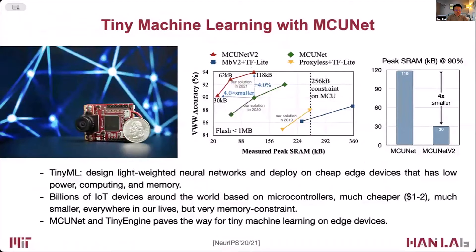Our previous work in tiny machine learning is MCUNet, where the goal of tiny ML is to design lightweight neural networks on cheap, low-power hardware devices, where there are billions of IoT devices. From 2019 to 2021, MCUNet pushed the boundary, reducing memory consumption from 256 kilobytes all the way down to about 32 kilobytes while actually increasing accuracy. From MCUNet V1 to MCUNet V2, we squeezed the model by another four times using only 30 kilobytes of iSRAM.